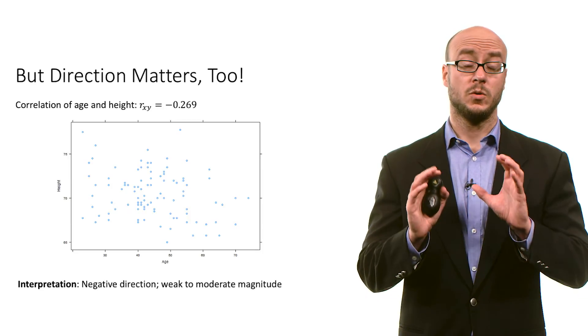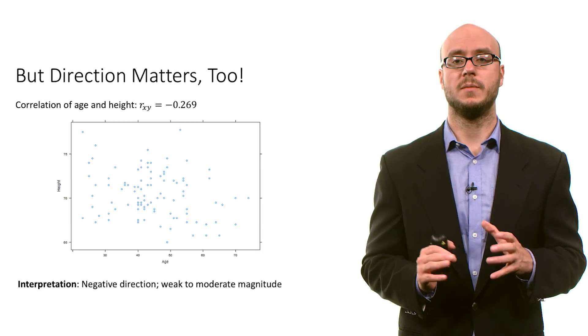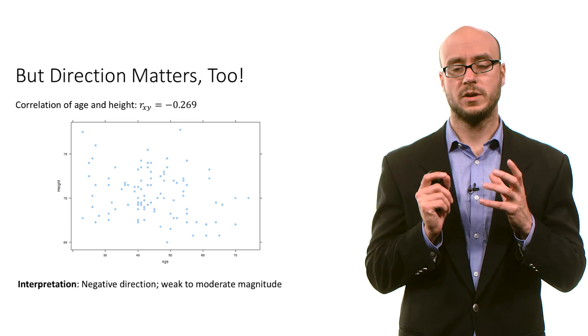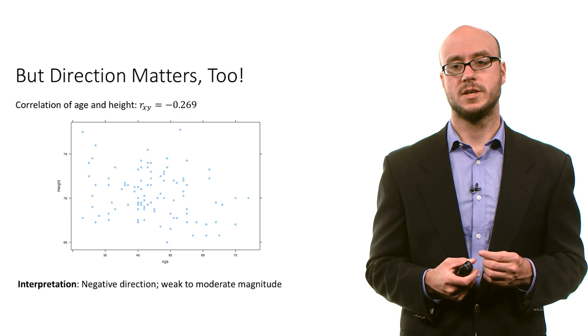And you will see correlation time and time again — it's probably one of the most frequently used measures of association. With that, we will conclude our discussion of correlation and understanding what it really consists of.